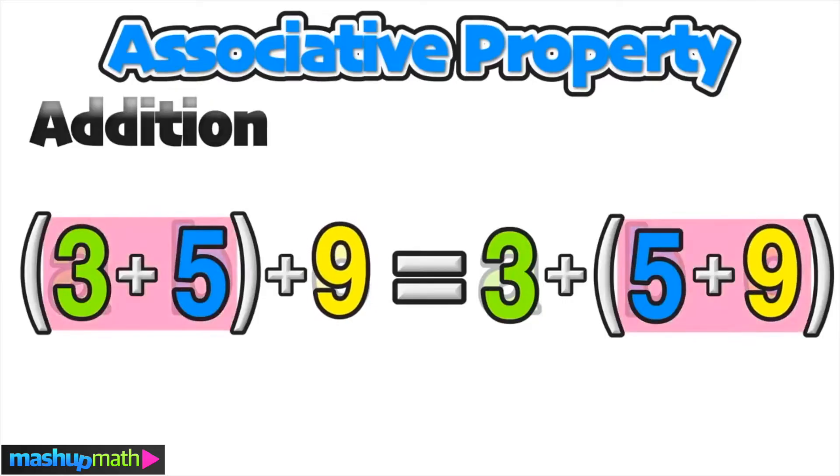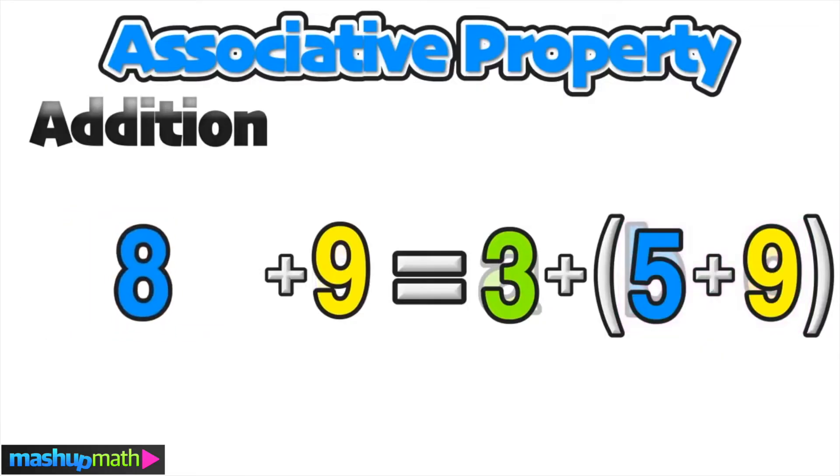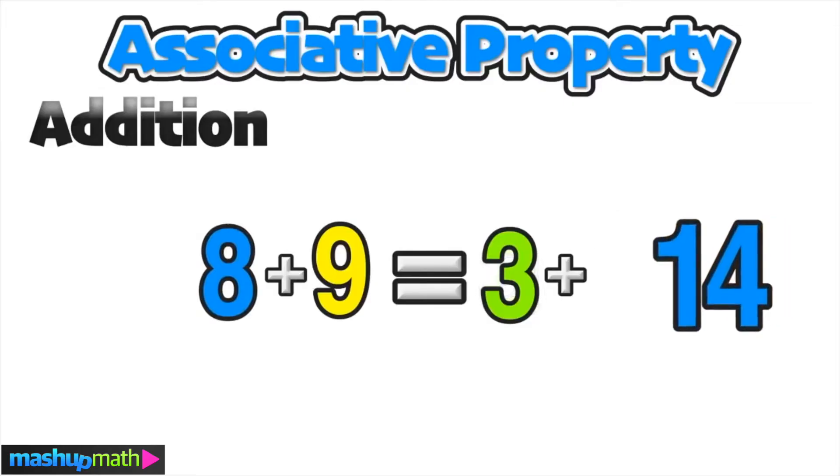We're going to follow order of operations by starting with the parentheses. On the left side, we have 3 plus 5 in parentheses, which equals 8. On the right side, we have 5 plus 9 in parentheses, which equals 14.